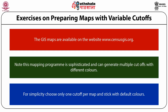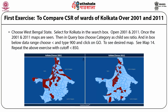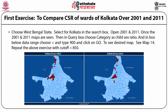The first exercise compares the wards of 2001 and 2011 of Calcutta: start with West Bengal state, choose Calcutta in the search box, open both 2001 and 2011 maps simultaneously, go to the query and choose the indicator child sex ratio, then put in the data range less than 900 — and you can also repeat it with less than 850 to see different outcomes in mapping.